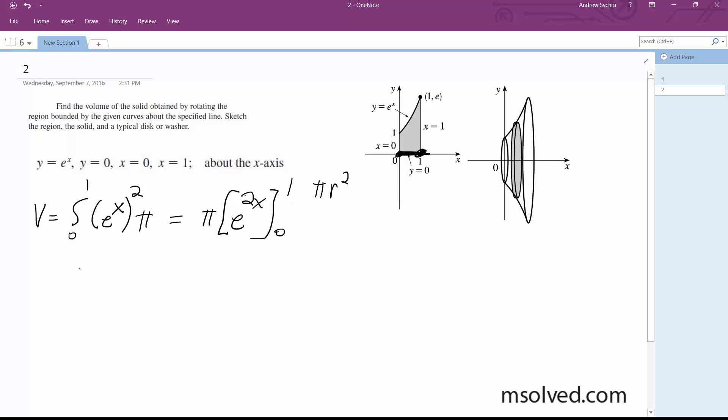What we end up with is pi over 2 times e squared minus e to the 0. Since anything raised to 0 is 1, we get pi over 2 times e squared minus 1.